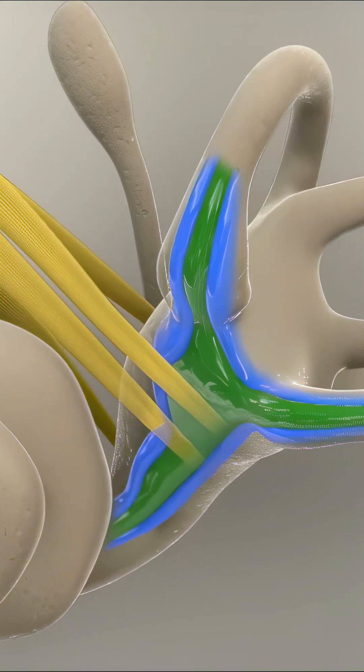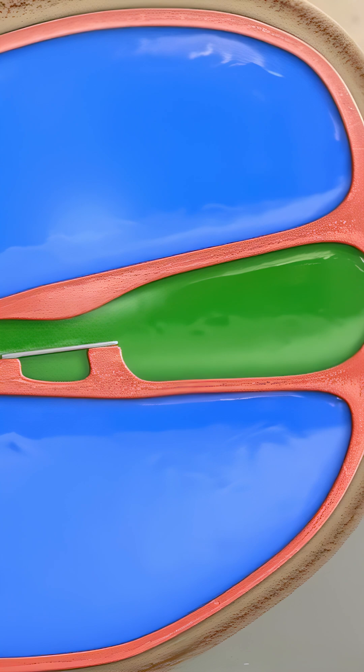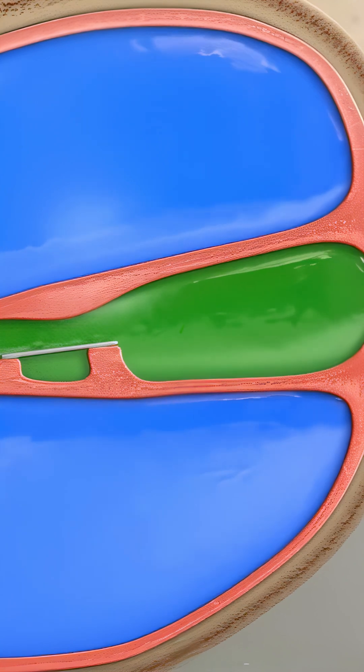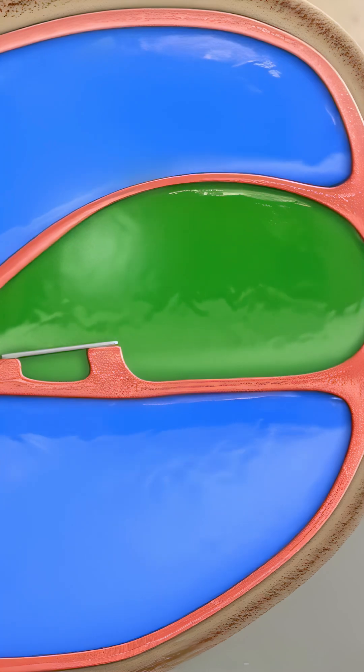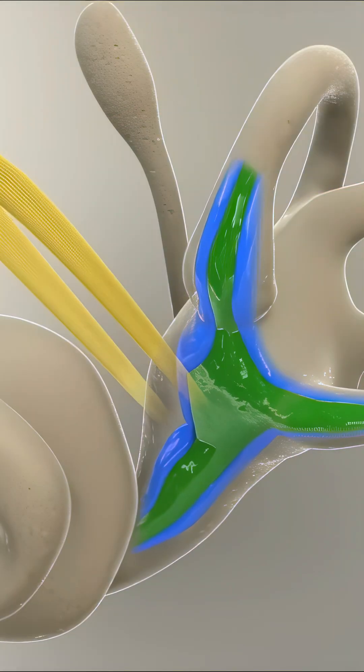This condition is marked by tinnitus and ear pressure followed by intense episodes of vertigo. It's believed to be caused by abnormal buildup of fluid in the endolymphatic sac located in the inner ear.